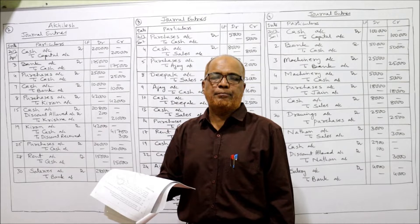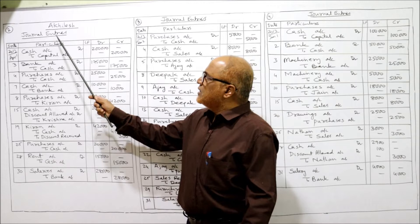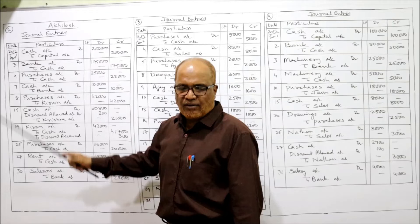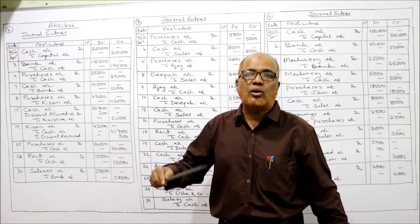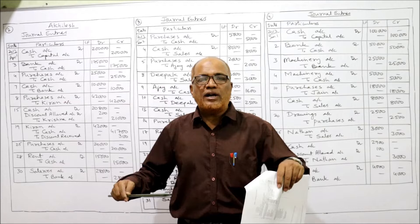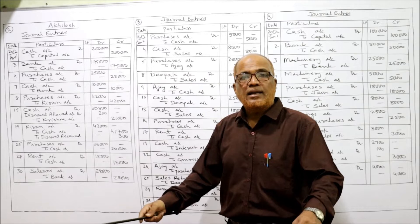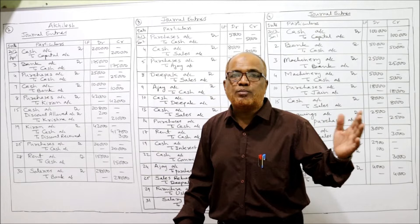Transactions of Achilles for April 2013 are given — we are going to pass the journal entries. Drawing the journal: date, particulars, ledger folio, debit, credit. First transaction, April 1st: Achilles started business with cash. Achilles is the owner/proprietor starting his business by introducing cash of rupees 2 lakh. From the business point of view, cash is coming in, so cash should be debited. Cash account debit to capital 2 lakh.